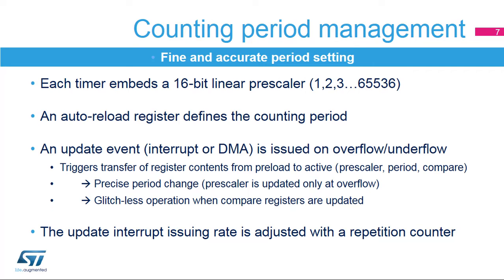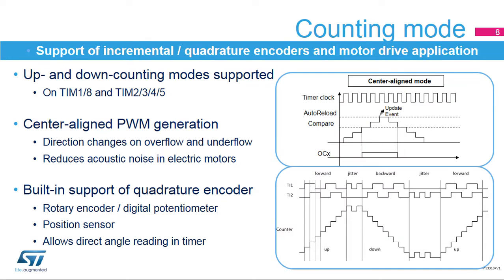The repetition counter is particularly useful when dealing with high PWM frequencies. Some STM32 timers feature up-and-down counting modes: the advanced control timers 1 and 8, and the general-purpose timers 2, 3, 4, and 5. The counting direction can be programmed by software or automatically managed by the timer in center-aligned PWM mode, where the counting direction changes automatically on counter overflow and underflow. This mode reduces acoustic noise by doubling the effective current ripple frequency. The counting direction can also be automatically handled when the timer is in encoder mode.